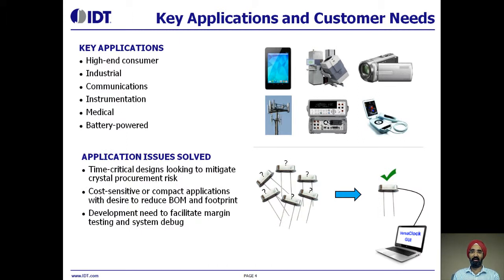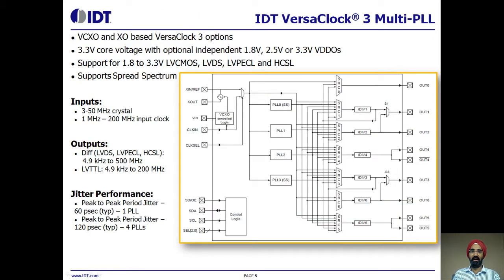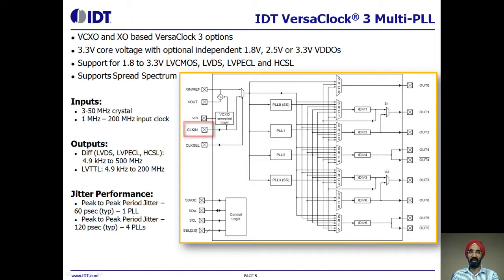As you can see, there are numerous application issues solved by the VersaClock family of products. As shown in the block diagram, there are four internal PLLs, each individually programmable, allowing for four unique non-integer-related frequencies generated from a single clock reference. The reference clock can come from one of two redundant clock inputs, and automatic or manual switchover allows any one of the redundant clocks to be selected during normal operation.